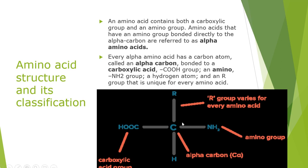Coming to the structure of amino acids, amino acids are termed as alpha amino acids if both the carboxylic group and amino group are attached to the same carbon atom. Here, R indicates an alkyl group, where this R group differs for each amino acid — that is, it is going to vary for every amino acid.